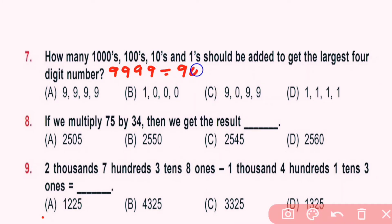Question 7: Here 9000 plus 990 plus 9. How many thousands required to make 9000? Here 9 thousands required to make 9000, for 900 ninety hundreds required, nine tens required, and for 9 nine ones required. So here A is right answer.